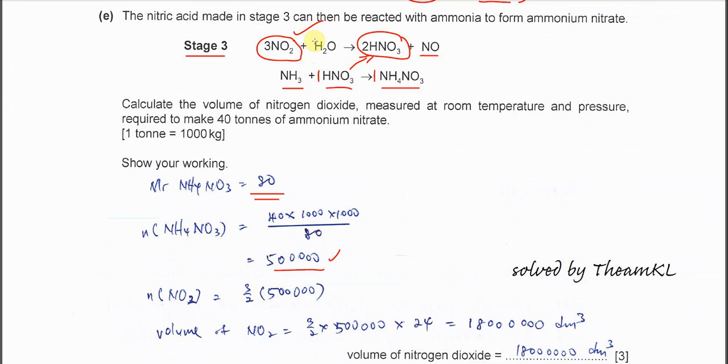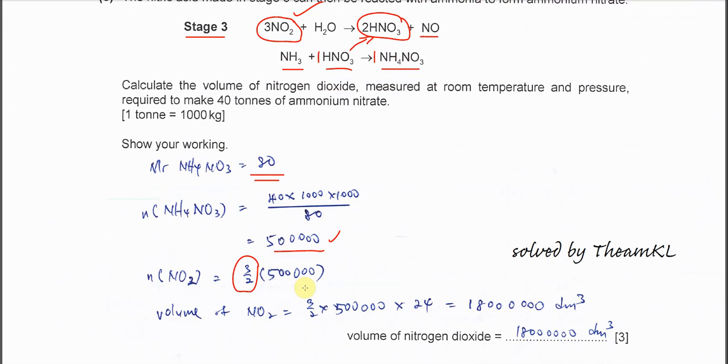So we just use the mole ratio which is 3 over 2. So we just use the mole of ammonium nitrate times 1.5 or 3 over 2 to get the moles of NO2.